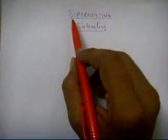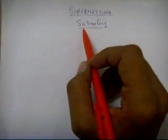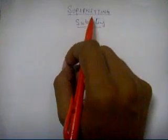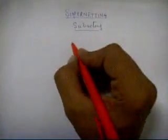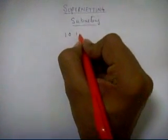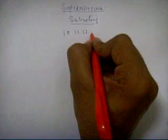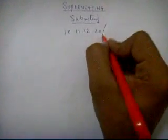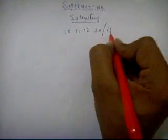Here we start a session to understand supernetting, but first we have to understand subnetting. For example, we will start with an example. You have a net ID 10.11.12.20/16. Slash 16 means it is already subnetted.